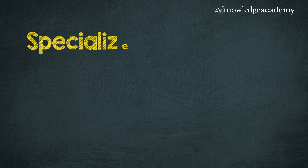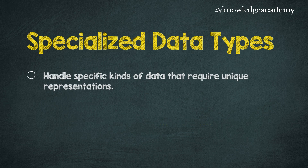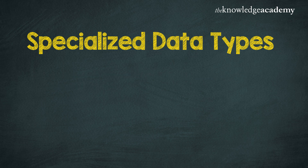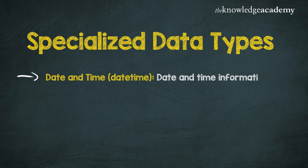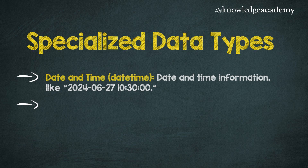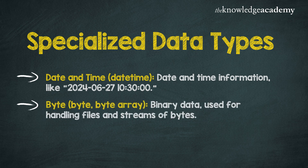The last category is specialized data types, which handle specific kinds of data requiring unique representations, like date and time and bytes. Date and time data types are crucial for time series analysis and scheduling tasks. Bytes are used for low-level data manipulation, such as reading and writing binary files.